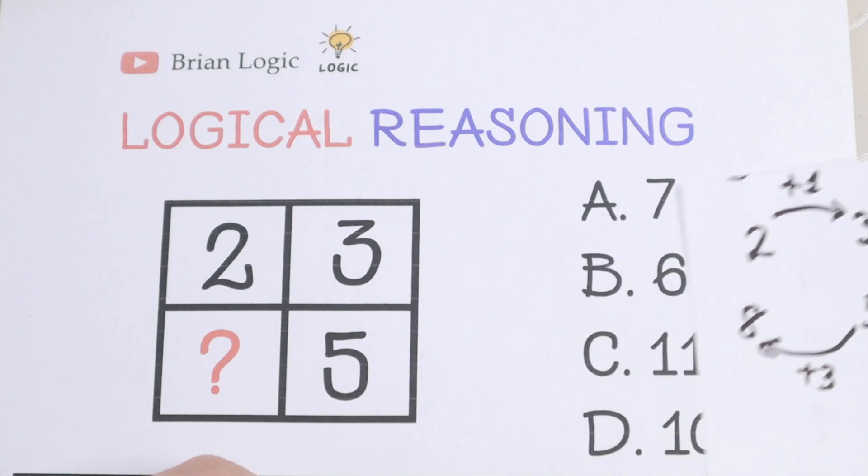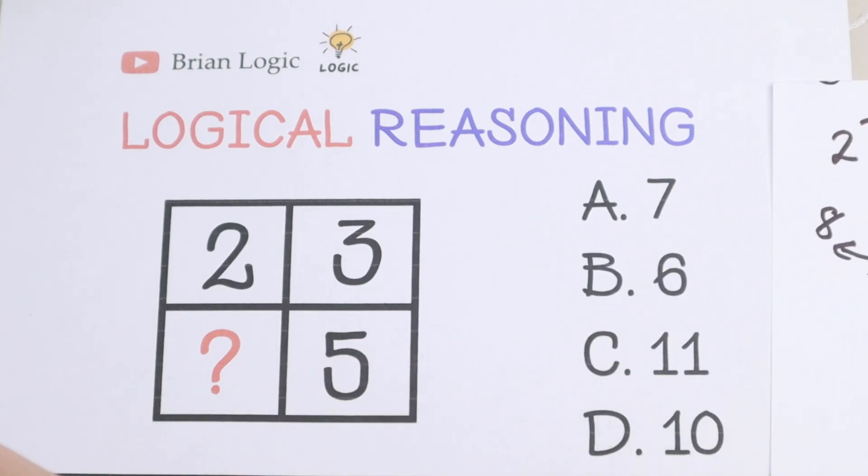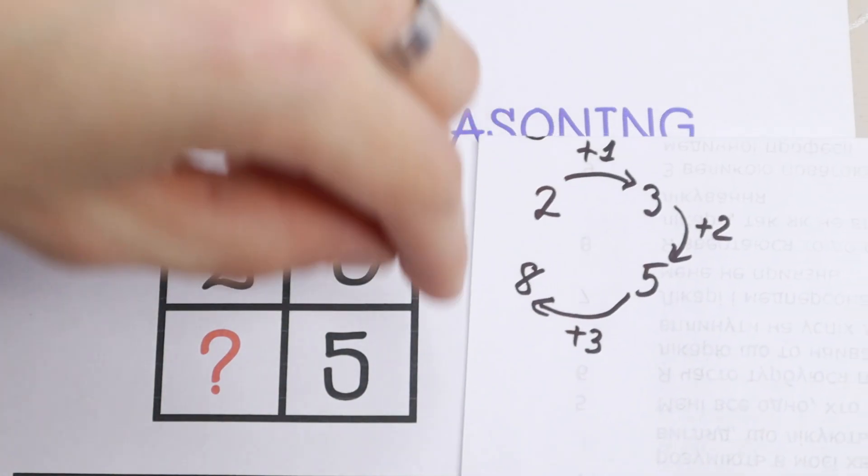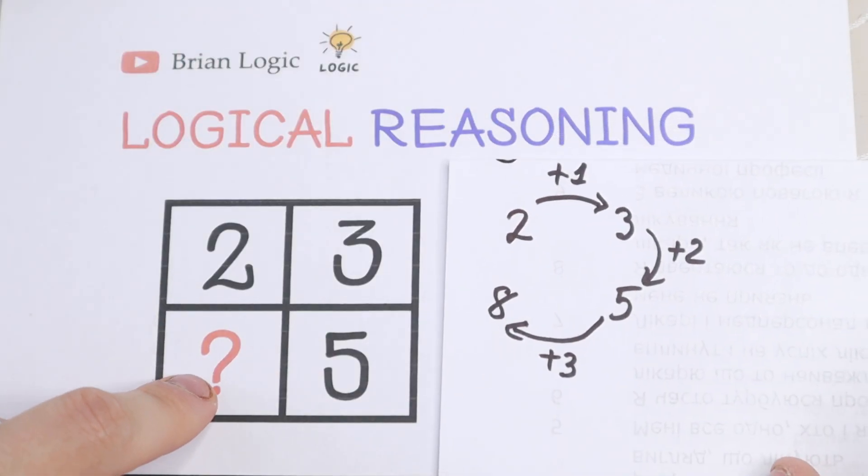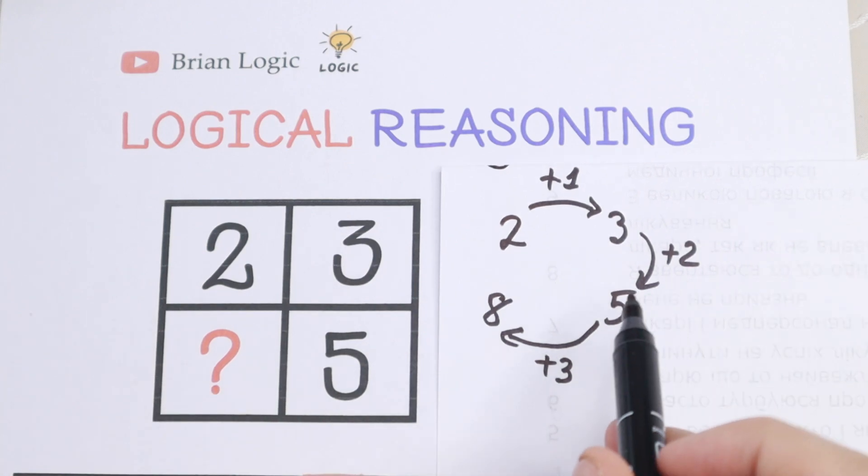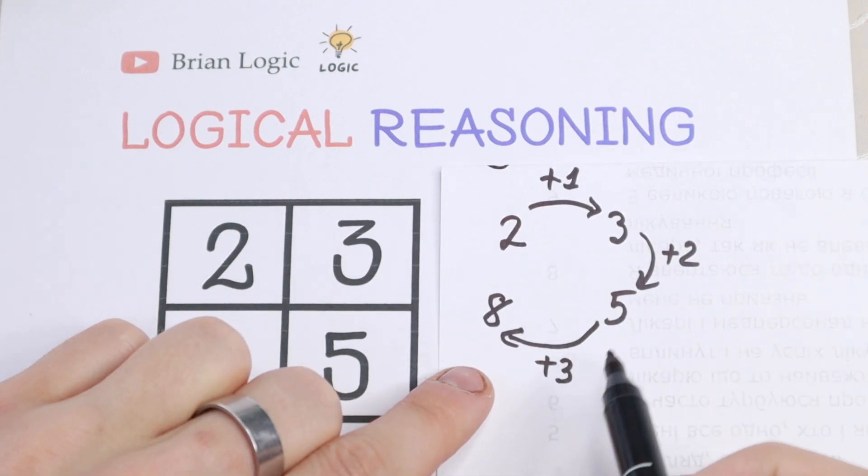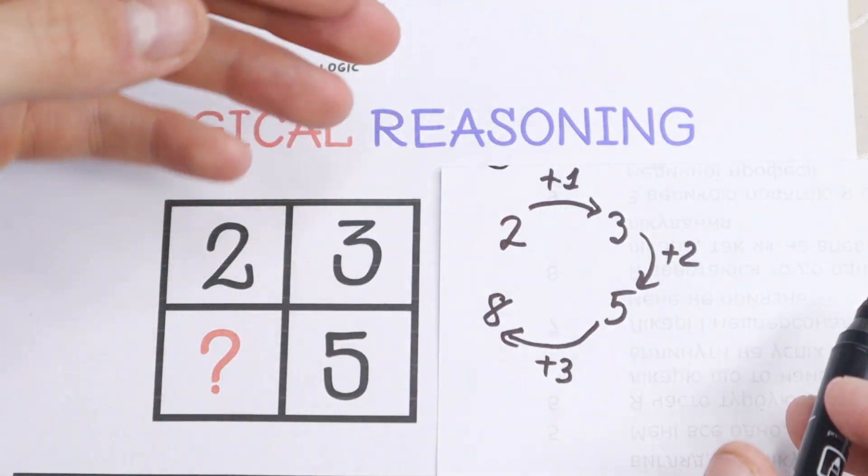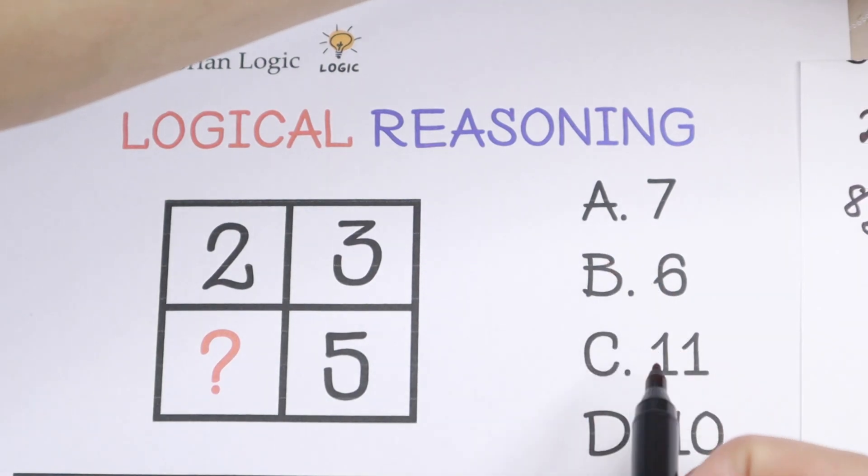But we don't have this answer in our options. So we have 7, 6, 11 and 10. So I want to reject this answer 7 because there is no way that this number will be 7. Because we need to add 2 to this number to get 7. But right here we have a pattern of natural numbers. So 1, 2, right here 3. So there is no way the answer will be 7.